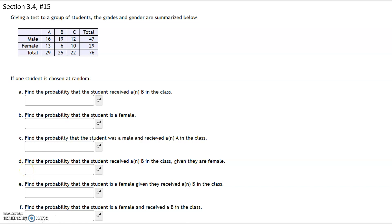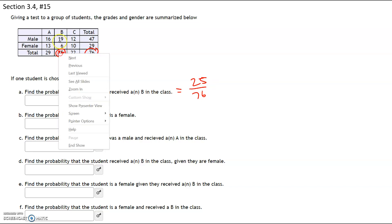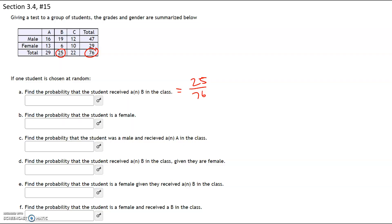We're given a test to a group of students. Part A: find the probability that a student received a B in the class. If there's no given, we're looking for all the students who received Bs and the denominator is going to be everybody — so that'll be 25 out of 76. Part B: find the probability that the student is female. We're looking for all students who identify as female in this class, that's a total of 29 students. The denominator is 76, so the answer is 29 out of 76.